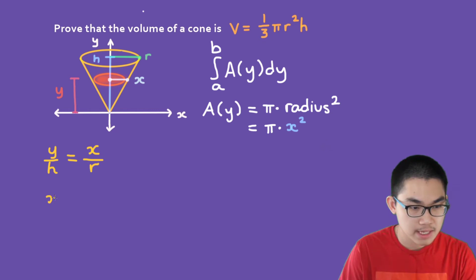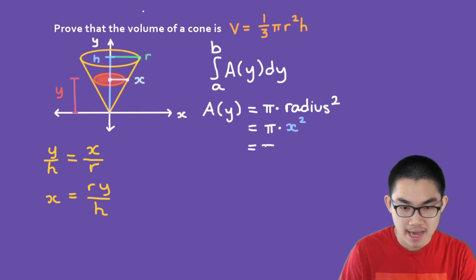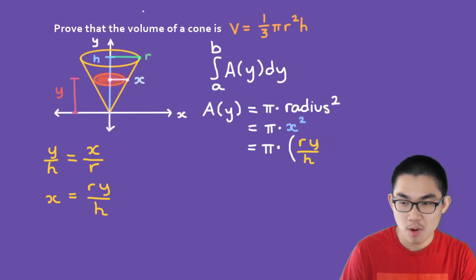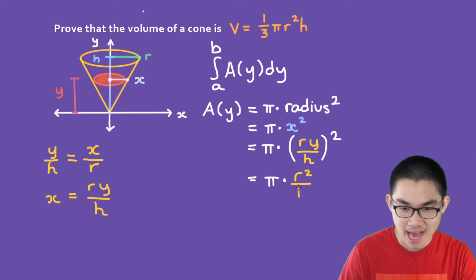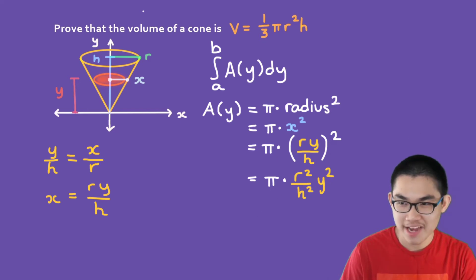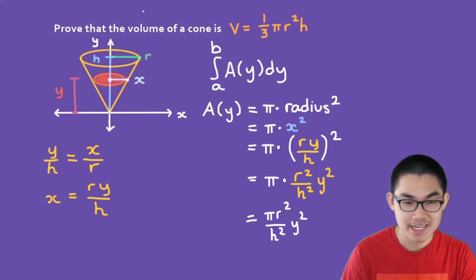From the proportion, x = ry/h. Substituting into the area formula gives A(y) = π × (ry/h)², which simplifies to π × (r²/h²) × y². We can write this as A(y) = πr²/h² × y². We have successfully found the formula for the area of the cross section.